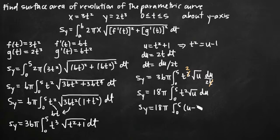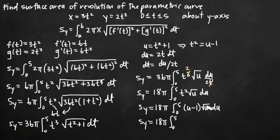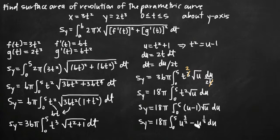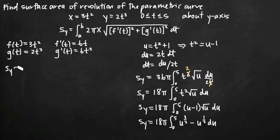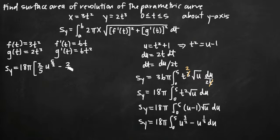Plugging t squared equals u minus 1 into our integral gives us 18π times the integral of (u minus 1) times the square root of u, du. Multiplying out: u times u to the 1/2 is u to the 3/2, and negative 1 times u to the 1/2 is minus u to the 1/2. Applying the power rule to integrate: we get 2/5 times u to the 5/2 minus 2/3 times u to the 3/2, evaluated from 0 to 5.